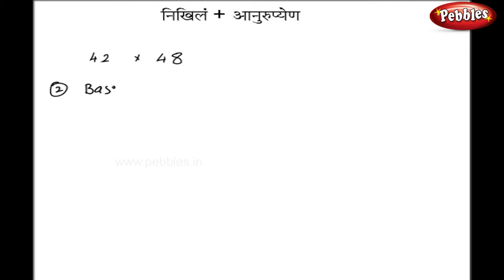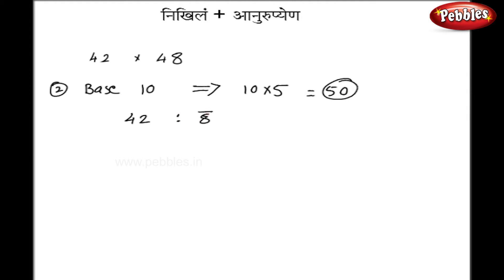In another case, if I select my base as 10, then I have to modify it like 10 into 5, so the new base is 50. The rest of the calculations are the same. Now 42 minus 50 gives minus 8, and 48 minus 50 gives minus 2. So my right hand side is 16 again. But now there is only one zero in the base, so I have to write it as 1 carry over and 6. My left hand side is 40 again.